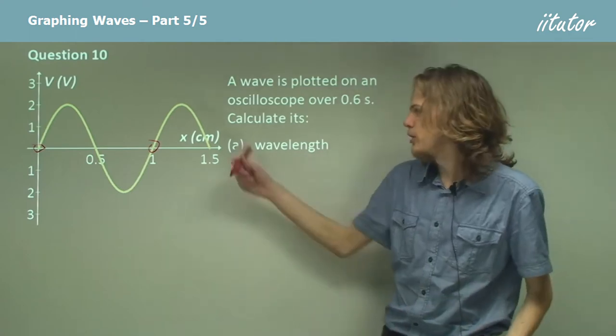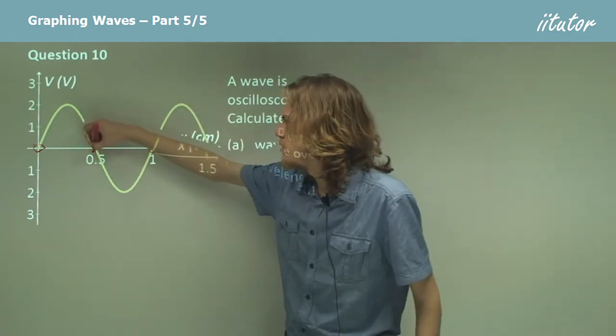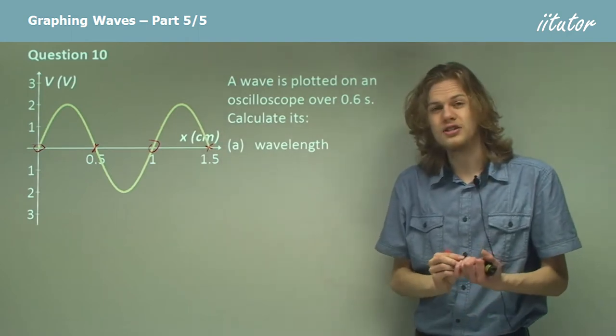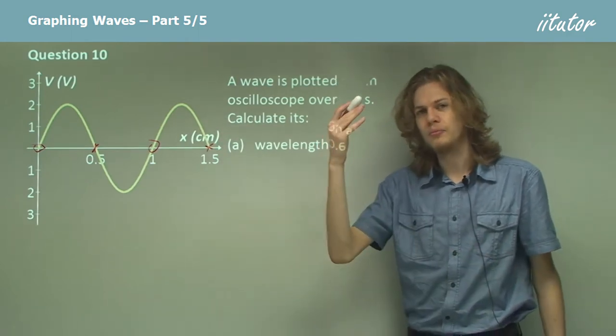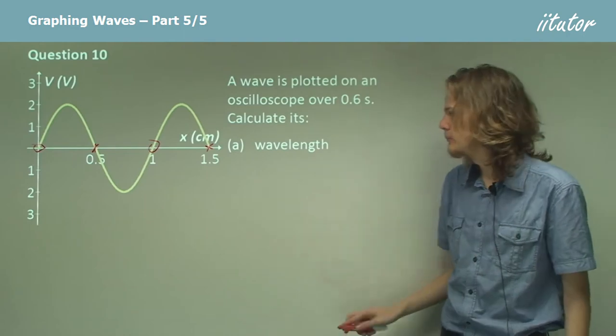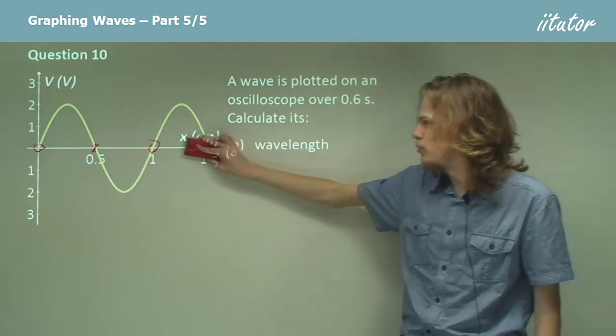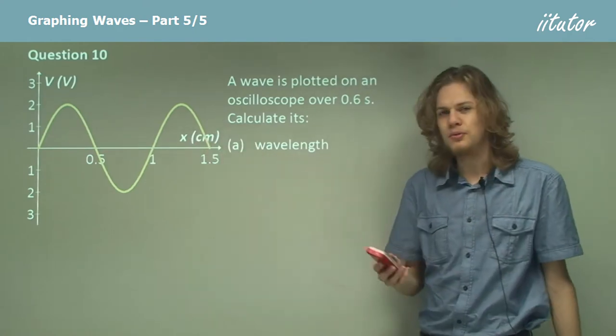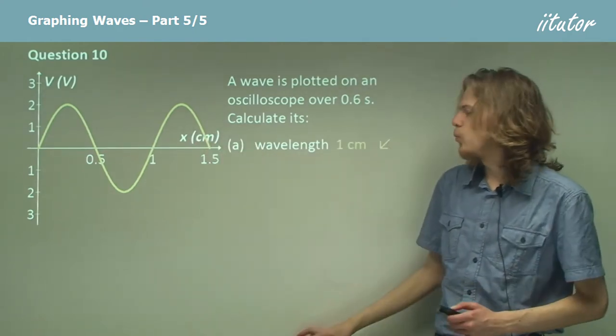The other two parts of the wave that we could look at are this part and this part for example. So in both of these cases we're halfway through heading down from a crest to a trough. And in both cases, of course, the wavelength is going to have to be the same. We can see pretty easily that that's going to be one centimeter.